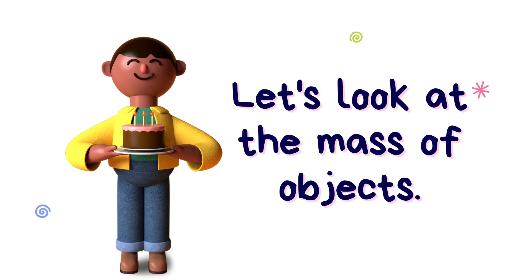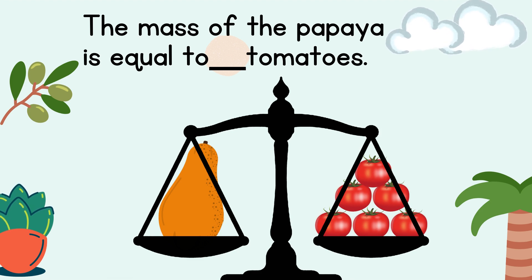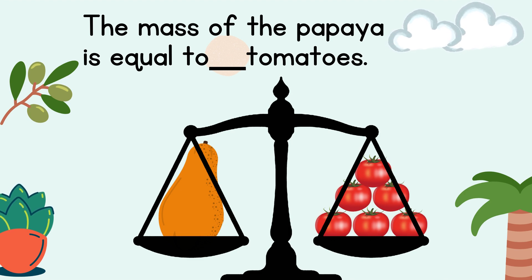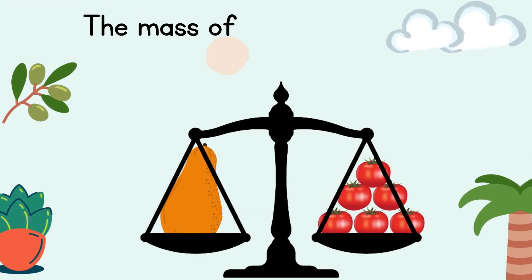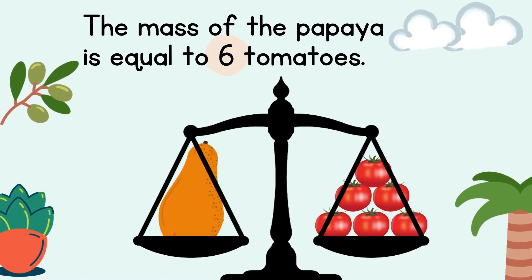Now let's look at the mass of objects. Look carefully — can you tell the mass of the papaya is equal to how many tomatoes? Let's check. The mass of the papaya is equal to six tomatoes. Well done if you counted correctly.